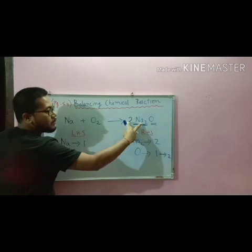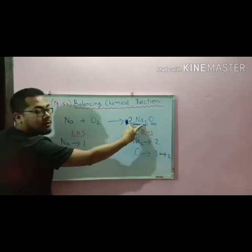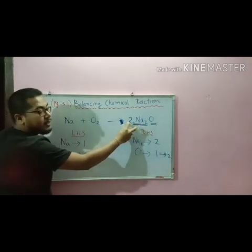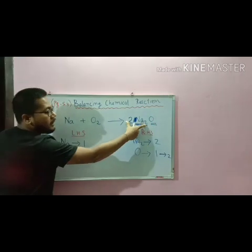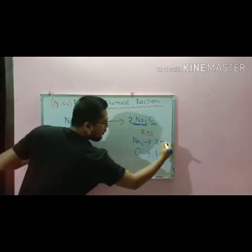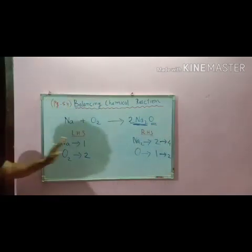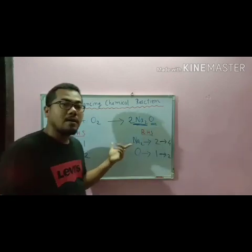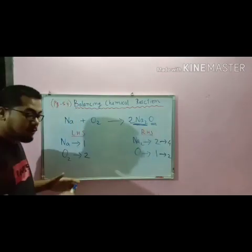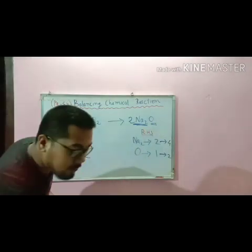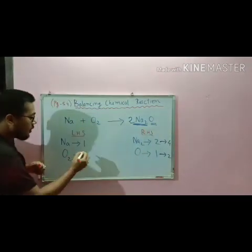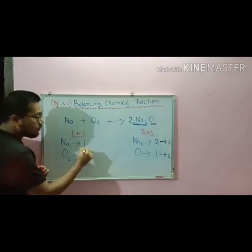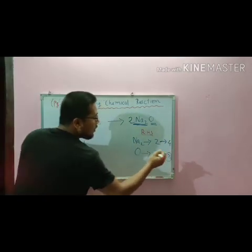But sodium is already having two on the RHS. Again, we are adding the coefficient two, so sodium will become four — two times two equals four. Now our oxygen is balanced: two on LHS and two on RHS.